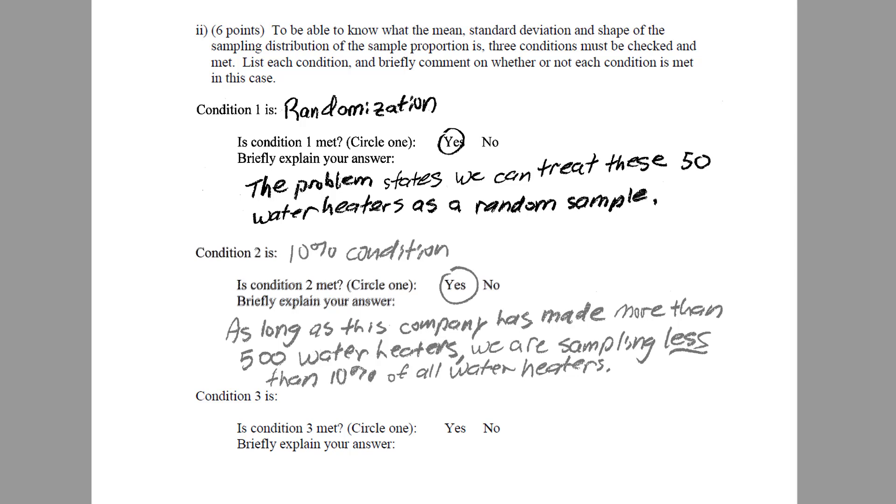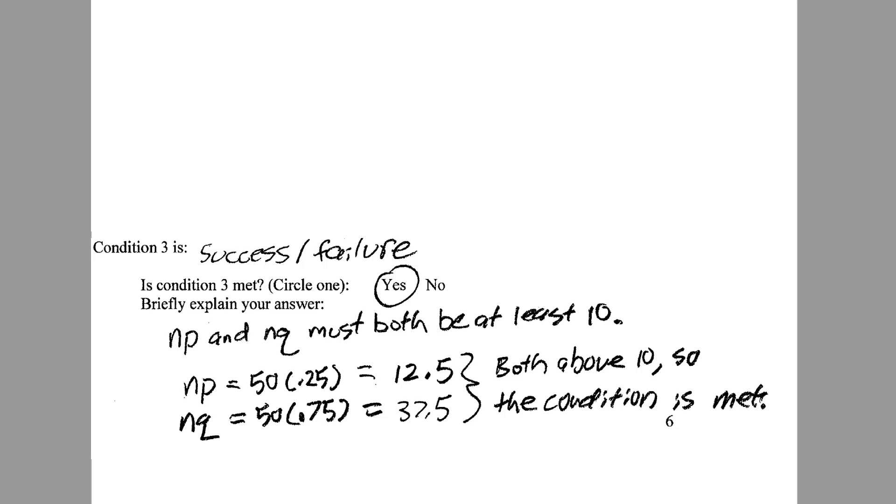Finally, condition number three is the success-failure condition. And yes, we meet this condition. Because we need to look at how many successes there are given P and how many failures there are given Q. P in this problem is 25%, and Q is the complement, which is 75%, obtained by doing 1 minus P. So let's go ahead and take N, which is 50, and times that by P. 50 times 0.25 is 12.5. Next, we take Q, 0.75, and times that by N, which is 50, and get 37.5. Both 37.5 and 12.5 are greater than 10. It's important to note that we need at least 10 successes and at least 10 failures. We do this by checking NP and NQ and making sure both are greater than 10.